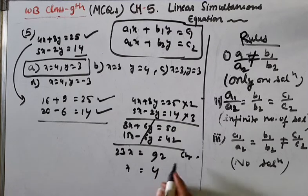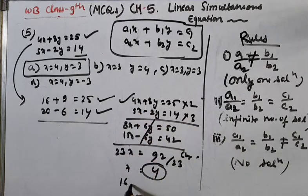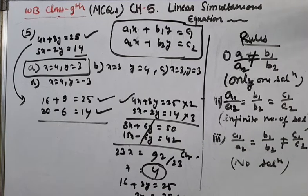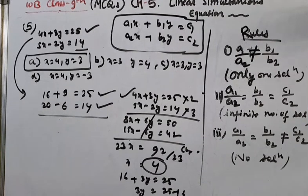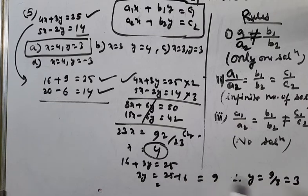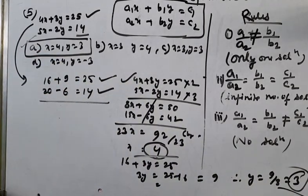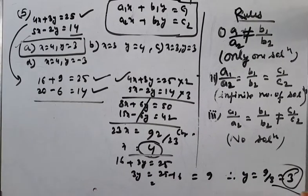With x equals 4, substituting back: 4 times 4 is 16, plus 3y equals 25, so 3y equals 25 minus 16 equals 9, giving y equals 3. So x equals 4 and y equals 3, confirming option A is the right answer. You can solve this using substitution, elimination, or by directly putting values — any method works for MCQs.